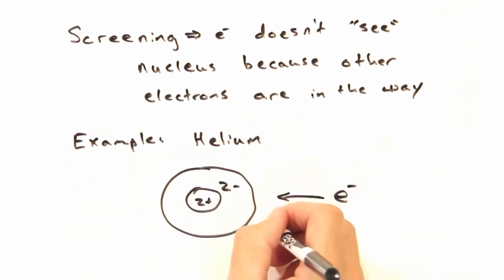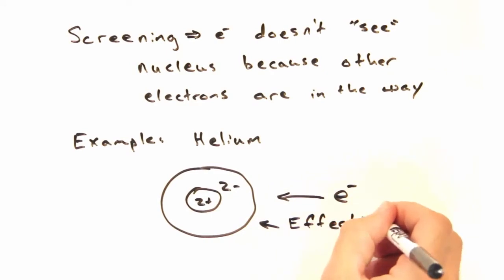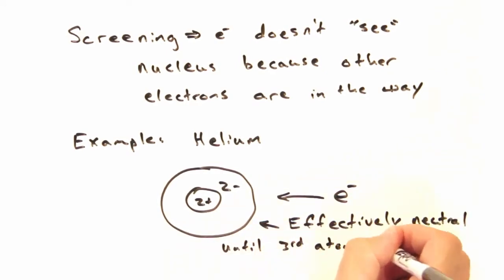Yeah. An example of that would be the helium atom with two protons and two electrons. So now I bring in a third electron. The potential it feels is basically zero until it can get past these two electrons.